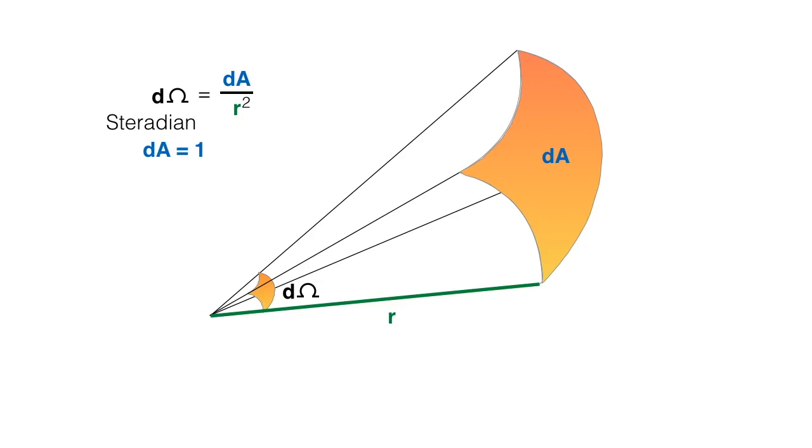When dA is equal to 1 unit, r is equal to 1 unit, then the solid angle subtended d omega will be equal to 1 steradian.